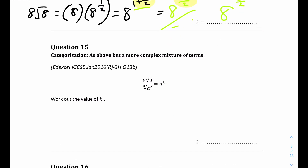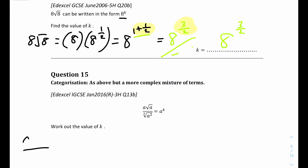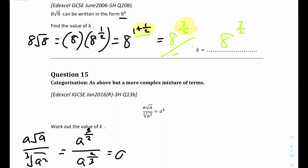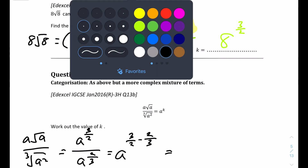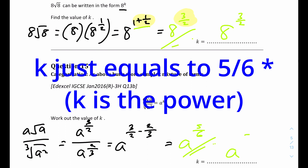Question 15: this is similar to question 14 on the top. The numerator can be rewritten as a to the power of 3 over 2, and the denominator is a to the power of 2 over 3, because you bring the root below the power. This means a to the power of 3 over 2 minus 2 over 3. Computing that gives a to the power of 5 over 6. So k equals a to the power of 5 over 6.